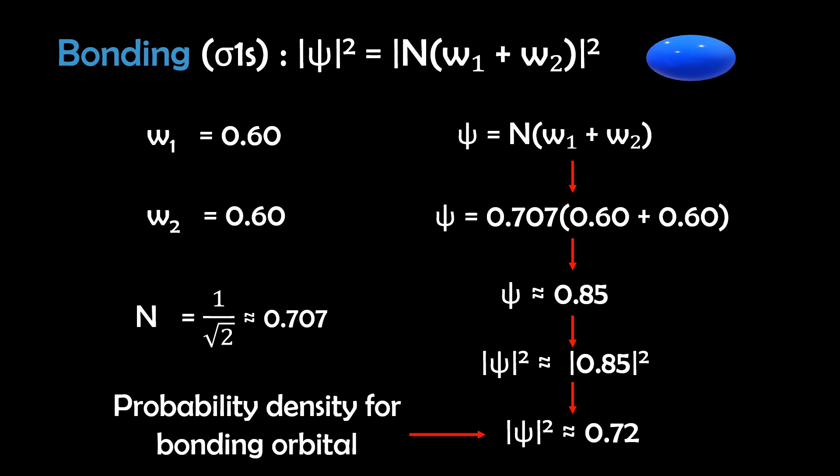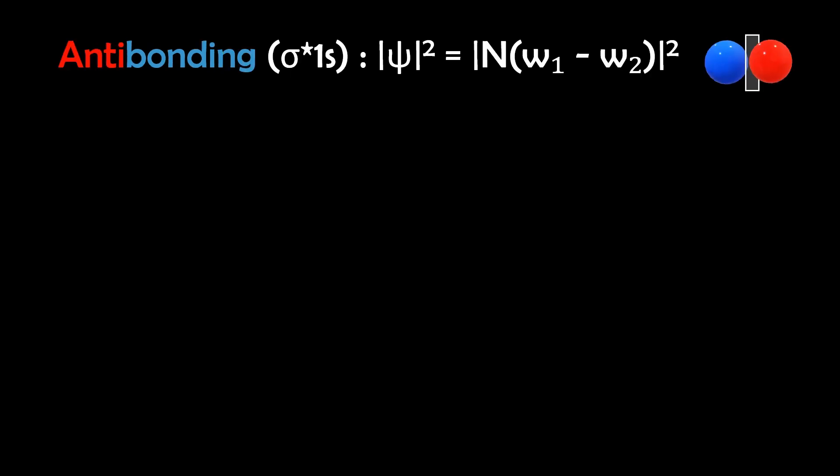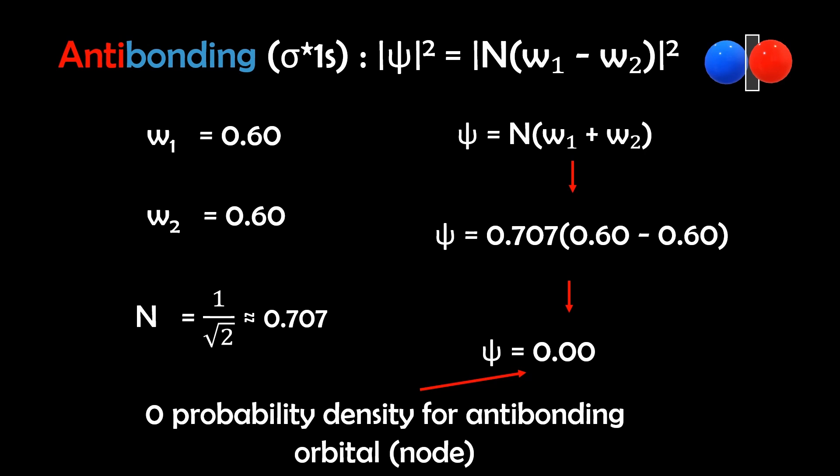Now for the antibonding orbital, we have ψ equals 0.707 times 0.60 minus 0.60, which equals zero. And this gives zero probability density, or a node, meaning there is no electron density between the atoms and no bonding occurs.